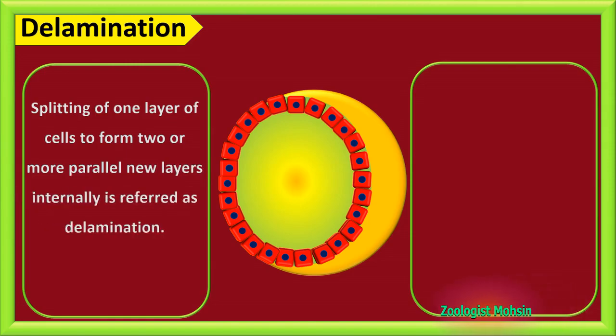Delamination: splitting of one layer of cells to form two or more parallel new layers internally is referred as delamination.